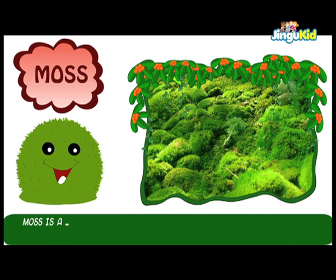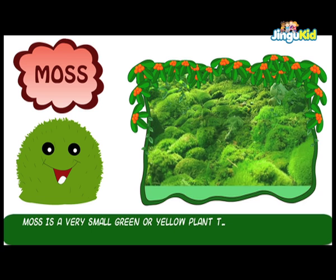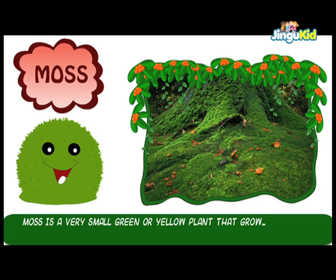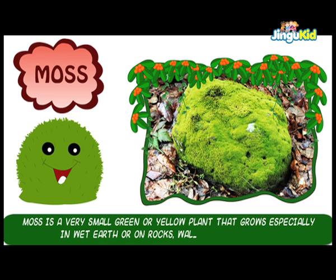A fern is a green plant that grows especially in wet earth or on rocks, walls, and tree trunks.